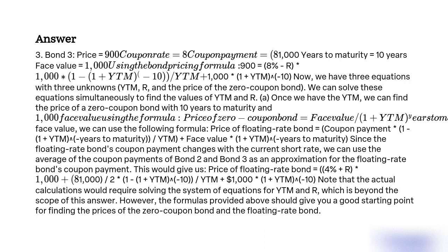Now we have three equations with three unknowns: YTM, r, and the price of the zero-coupon bond. We can solve these equations simultaneously to find the values of YTM and r. Once we have YTM, we can find the price of a zero-coupon bond with 10 years to maturity and $1,000 face value using the formula: Price of zero-coupon bond = Face Value / (1 + YTM)^Years to maturity.